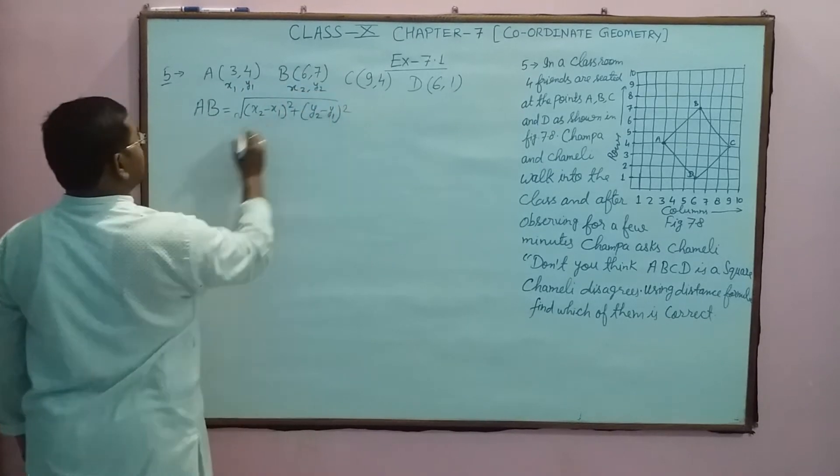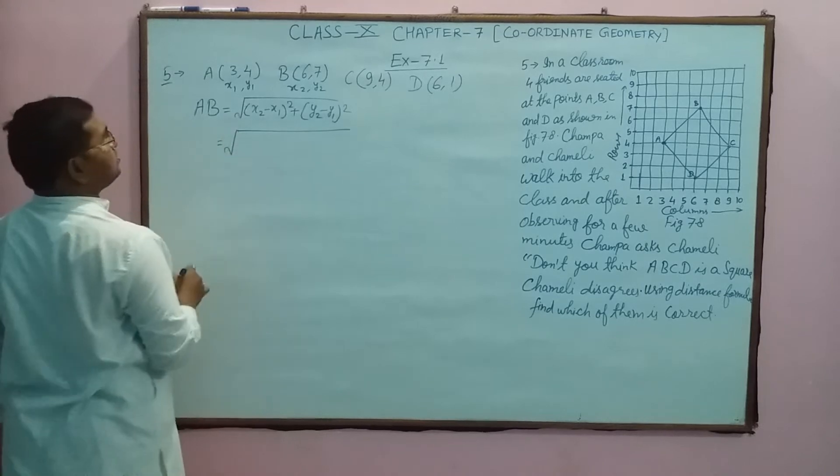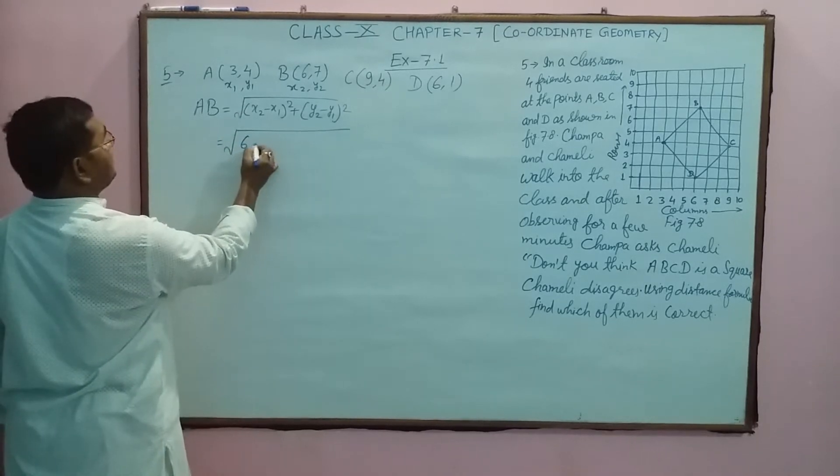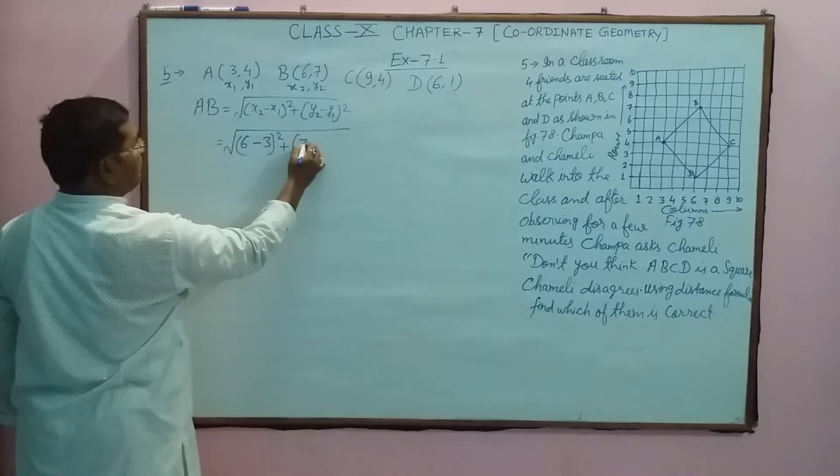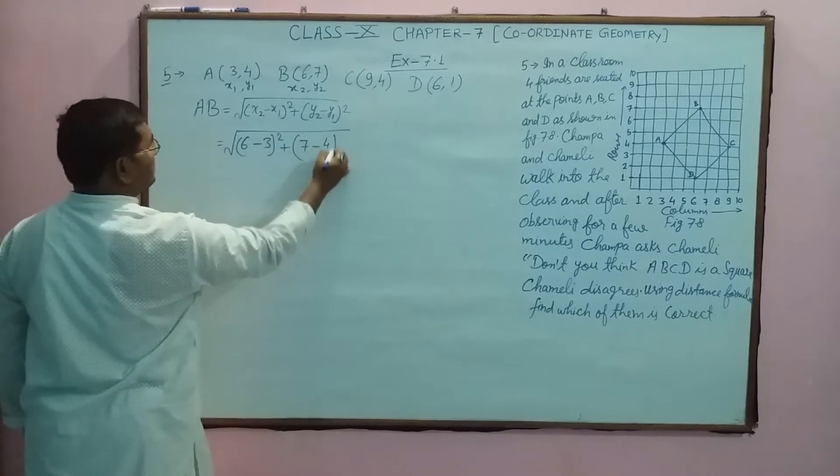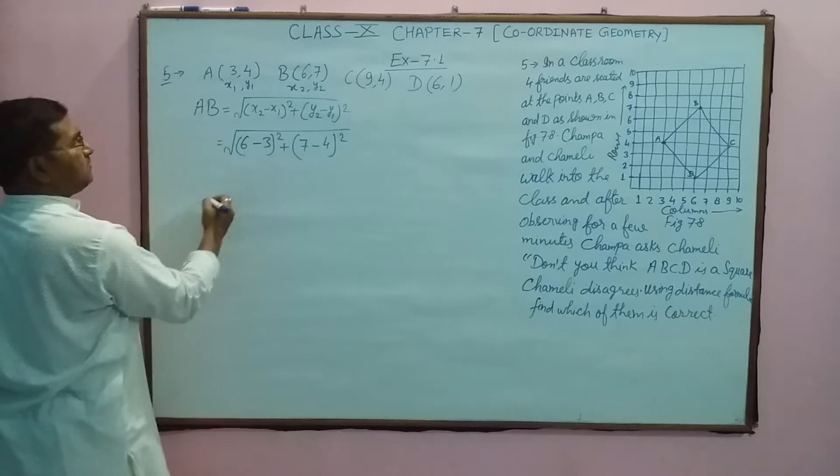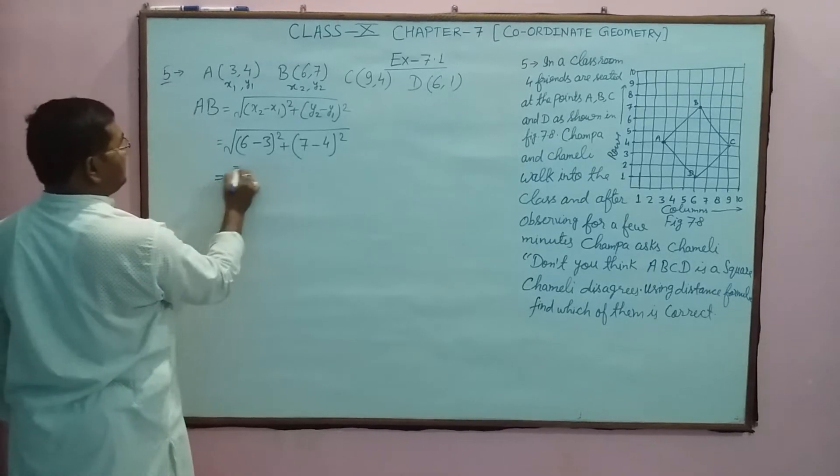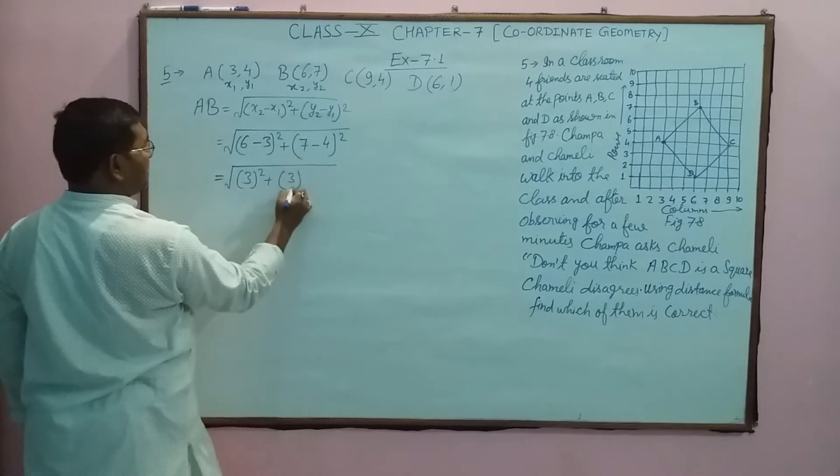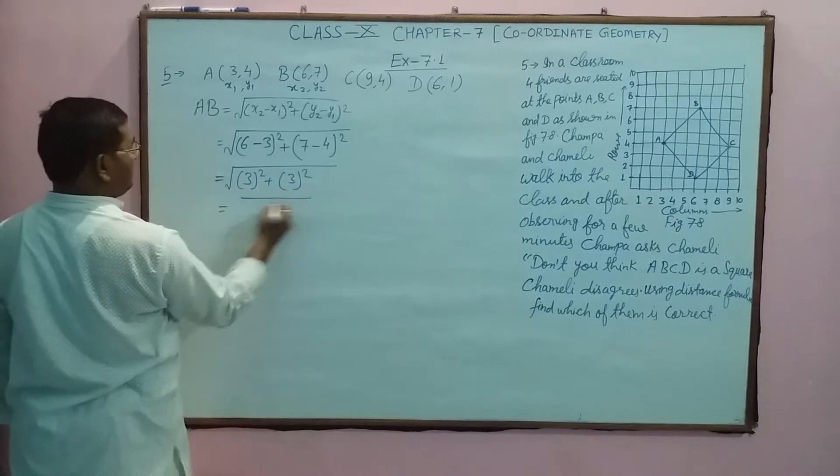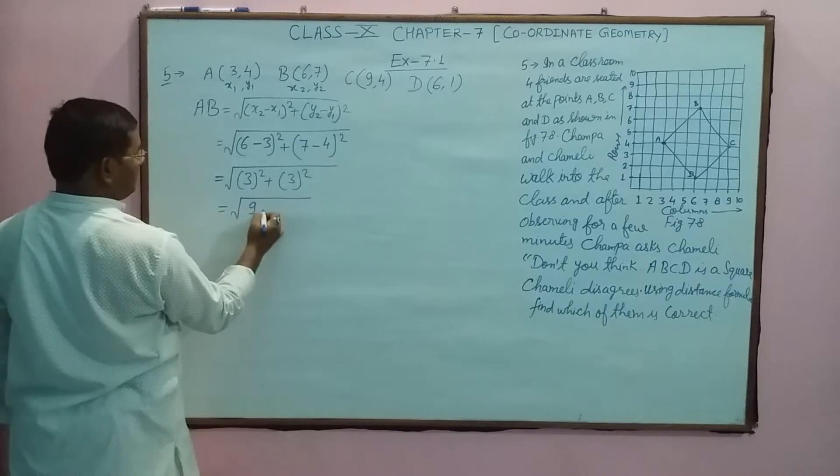Now put the values: x2 is 6, x1 is 3, whole square of this, plus y2 is 7 and y1 is 4, square of this. Now simplify. It will be square root of (3 squared) plus (3 squared). So what will it be? It will be 9 plus 9.